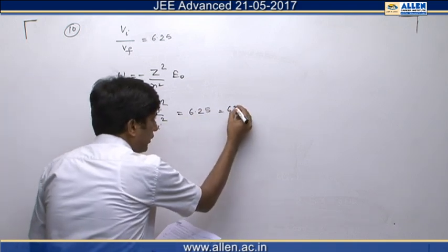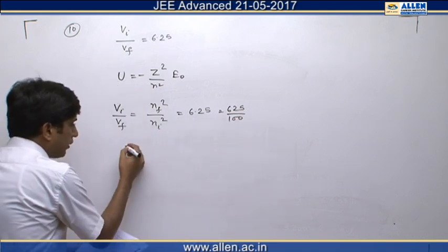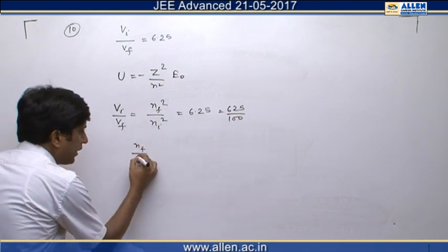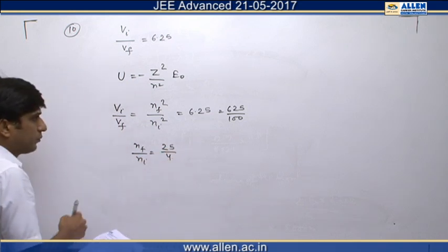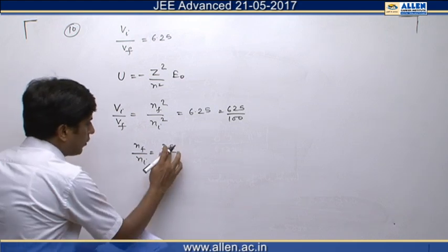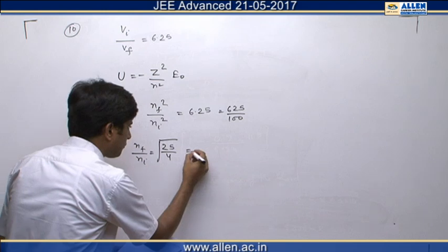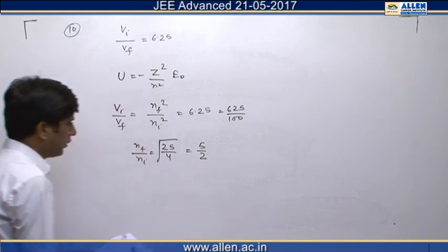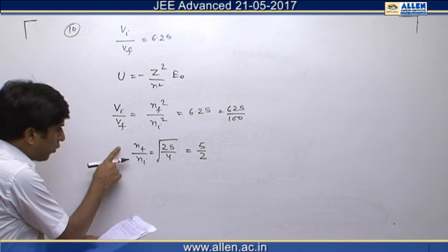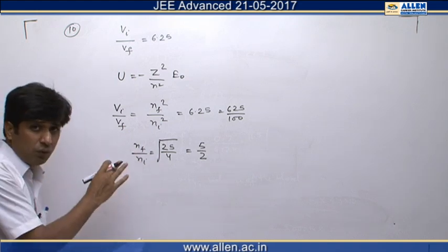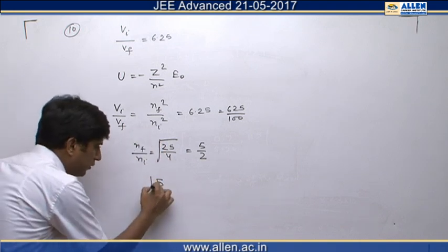This can be written as 625 by 100, so the value of n_final by n_initial is the square root of 625 by 100, which equals 5 by 2. From this equation we can easily say that the smallest possible integer value of n_final must be 5. Therefore the correct answer is 5.